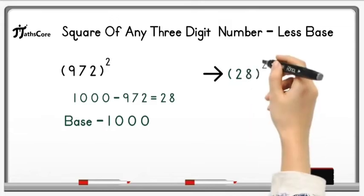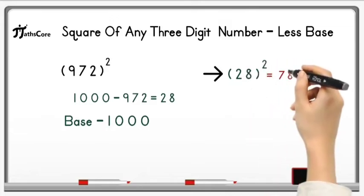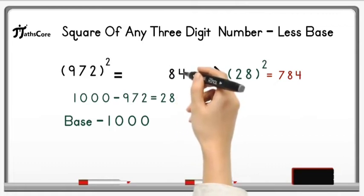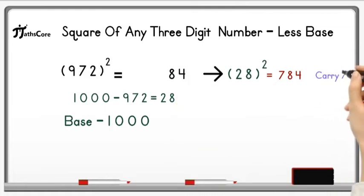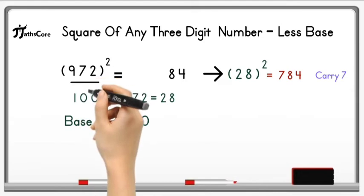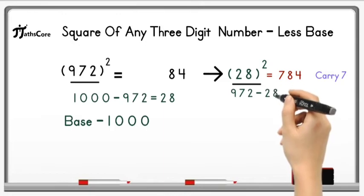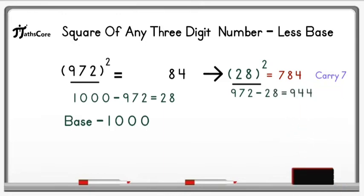Now let us find out square of 28 here. 28 square is equal to 784. Write down 84 in a product and take 7 as a carry. After that take whole number 972 here and subtract 28 from it. So 972 minus 28 is equal to 944.